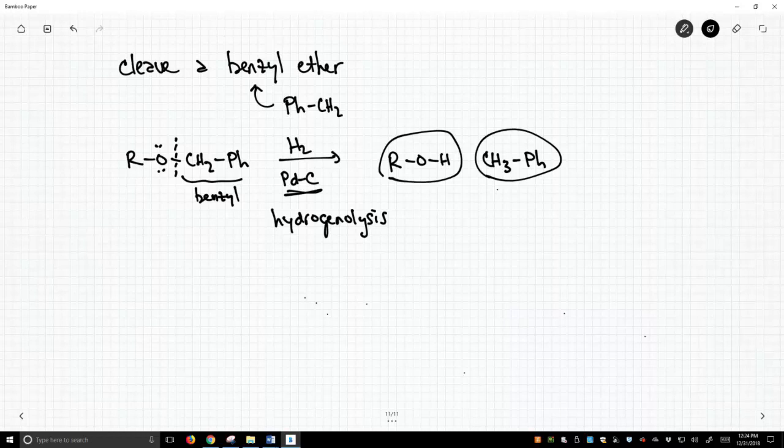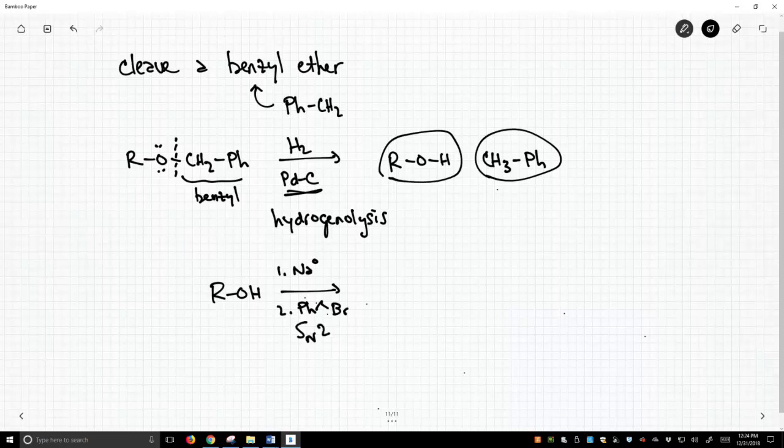So this is a specific type of ether that's very easy to make through the Williamson ether synthesis doing an SN2 reaction. So we can take an alcohol, and we'll have to deprotonate it so we can treat it with sodium, sodium metal, and then maybe benzyl bromide or benzyl chloride, and we'll do the SN2 reaction. This is our Williamson ether synthesis, and then we can do our chemistry.